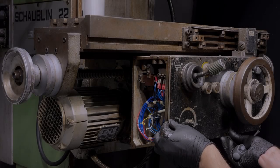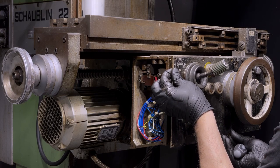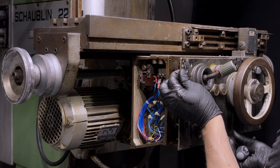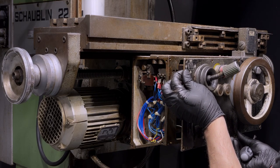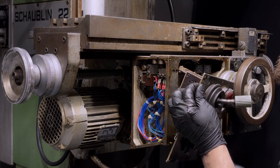I'm working on the restoration of this old Swiss-made Schaublin 22 milling machine. The electromechanical joystick to control the feeds is severely damaged. In this episode we are going to fix that.